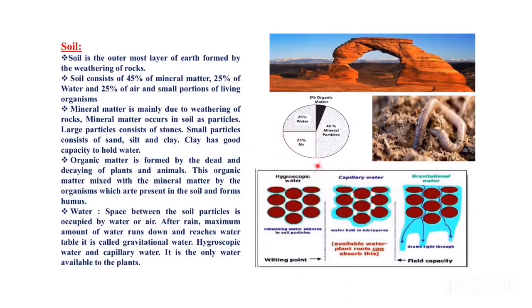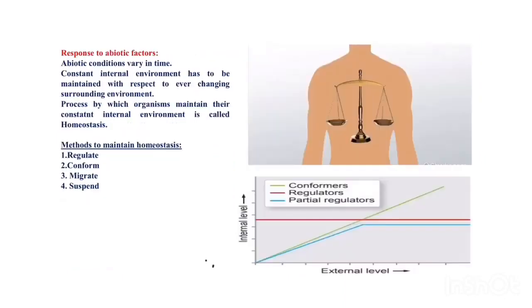Water present within the soil is of three types: gravitational water, capillary water, and hygroscopic water. When rain falls, some water flows down to the water table — that is gravitational water. Some water remains as a thin film around soil particles — that is hygroscopic water. Some water is held between the pore spaces of soil particles — that is capillary water. Capillary water is the only water available to plants, absorbed through capillary action.